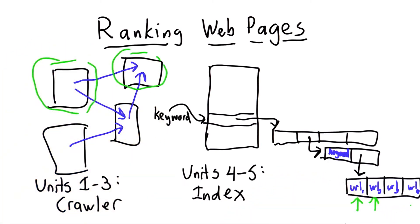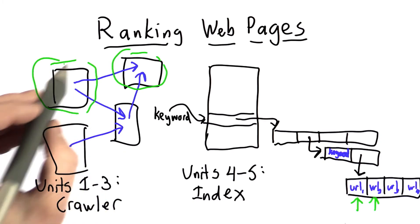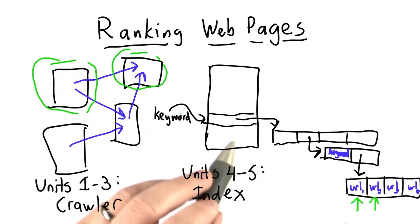So this doesn't tell us anything about which page is best. The order of the URLs in the list, and what we were getting as output, just depends on the order that things happen to go in the crawl.